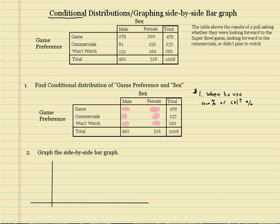What conditional means is we're not talking about everybody. We're either talking about what percentage of males watch the game for the game, or what percentage of females watch the game for the commercials, or what percent of the people who watch the game are males. So it's conditional on these column totals or these row totals.